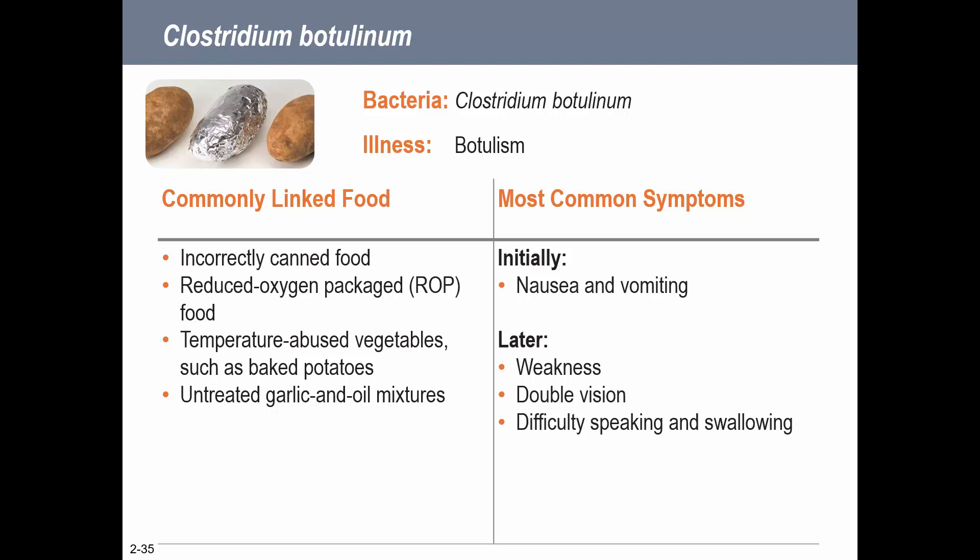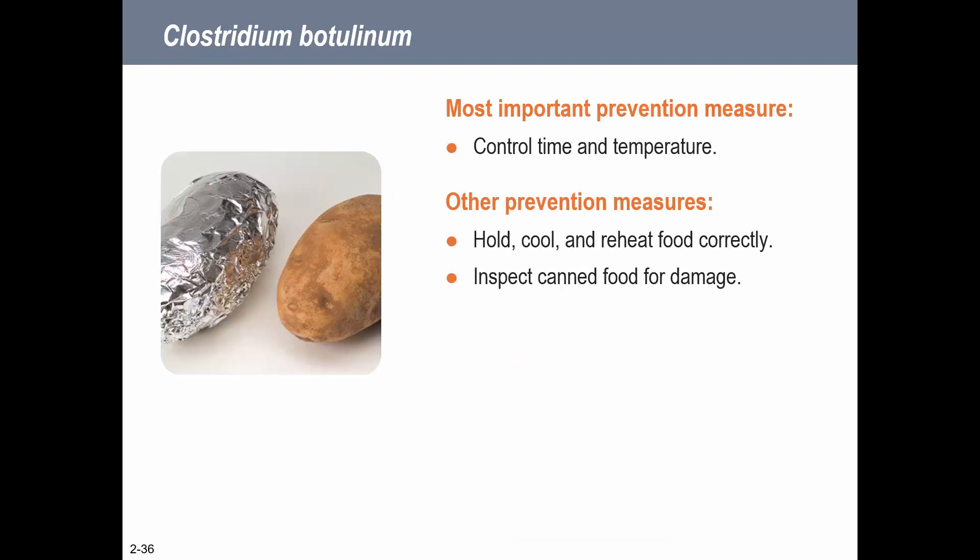Clostridium botulinum causes botulism. We see this mostly in incorrectly canned food, reduced oxygen packaging, and vacuum-sealed things - this is what they worry about more with sous vide. Temperature-abused baked potatoes and untreated garlic oil mixtures are also concerns. Botulism can cause nausea and vomiting, but later can cause weakness, difficulty speaking, and can be fatal. When home canning, you must follow a recipe because every different vegetable and fruit has different needs in terms of time and pressure.